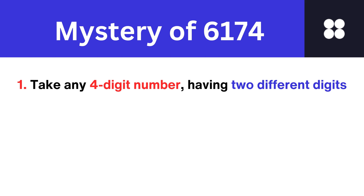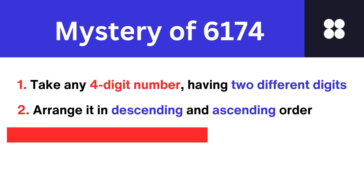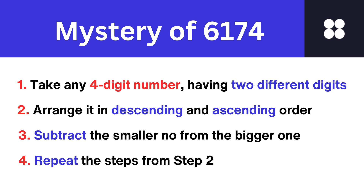Step 1: Take any 4-digit number using at least 2 different digits. Leading zeros are allowed. Step 2: Arrange the digits in descending order and then in ascending order to get two 4-digit numbers. Add leading zeros if necessary. Step 3: Subtract the smaller number from the bigger number. Step 4: Go back to step 2 and repeat. Within 7 iterations, you will find yourself at the mystical number 6174.